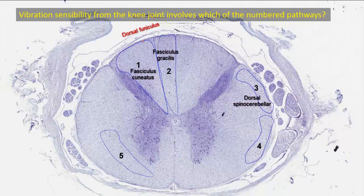Four is located just anterior to it and is thus the ventral or anterior spinocerebellar tract. Both spinocerebellar tracts convey unconscious proprioception from the lower limb to the cerebellum. Five is the anterior lateral system — lateral and anterior spinothalamic tracts — concerned with sensory modalities of light touch, pain, and temperature.